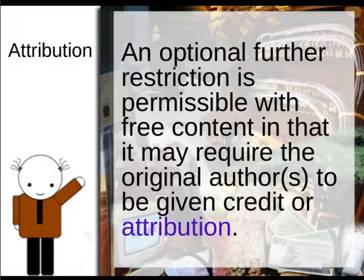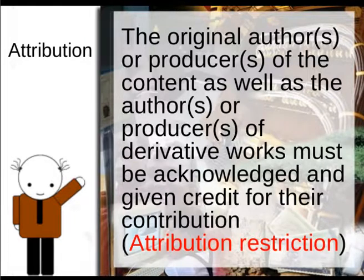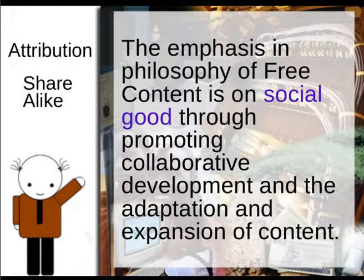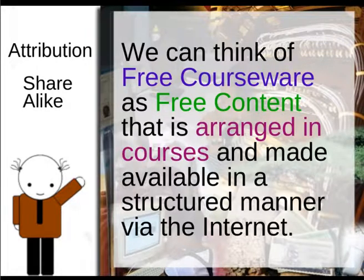An optional further restriction is permissible with free content in that it may require that the original author be given credit or attribution. The original author or producer of the content, as well as the authors of derivative works, must be acknowledged and given credit for their contribution. This is the attribution restriction. Attribution and share-alike combine together. The emphasis in the philosophy of free content is on social good through promoting collaborative development and the adaptation and expansion of content — irrespective of whether it's by people who desire to contribute to education or by commercial enterprises creating opportunities within the education space. Either way, education benefits.